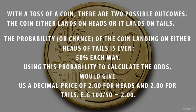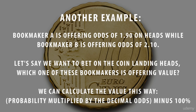For example, when tossing a coin, there are two possible outcomes: the coin either lands on heads or it lands on tails. The probability of the coin landing on either heads or tails is even — 50% each way. Using the probability to calculate the odds gives us a decimal price of 2 for heads and 2 for tails. Bookmaker A is offering odds of 1.9 on heads, while Bookmaker B is offering odds of 2.1. Let's say we want to bet on the coin landing heads — which one of these bookmakers is offering value?